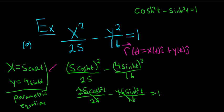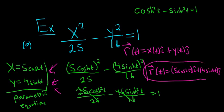So normally in calc 2 you do this, right? And then in calc 3 you find the vector-valued function. So r of t, here x was 5 cosh t, so 5 cosh t i hat. And then y was 4 sinh t, so plus 4 sinh t j hat. That would be the vector-valued function.